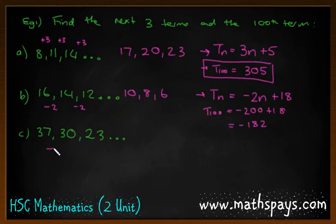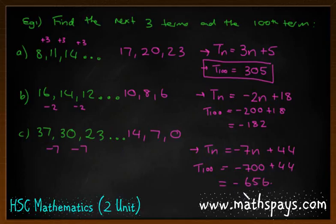For the last one, we're taking off 7. So we get 14, 7, and 0. The formula T_n equals negative 7n. If I test for the first one, negative 7 times 1 is negative 7, so I need to add 44. Not a bad idea to double check: negative 7 times 2 is negative 14, that makes 30. Correct. So T_100: negative 700 plus 44 equals negative 656.